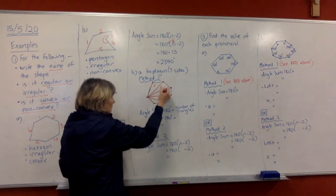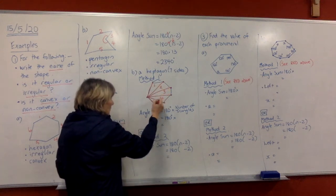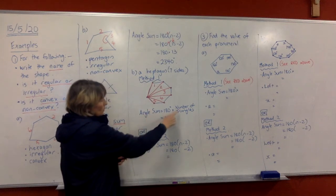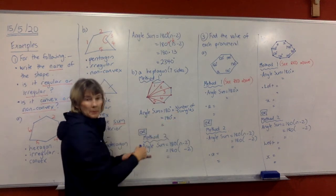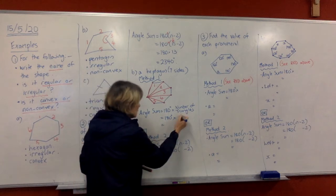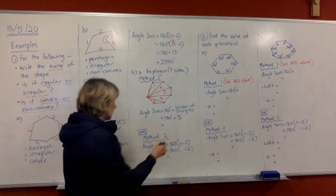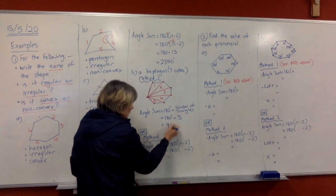Now you can see the triangles forming. I'm going to number them. We have five triangles. So we can use method 1 where we can do 180 degrees times by the number of triangles, which is 5. And if I do that and multiply it on my calculator, I'm going to get 900 degrees.